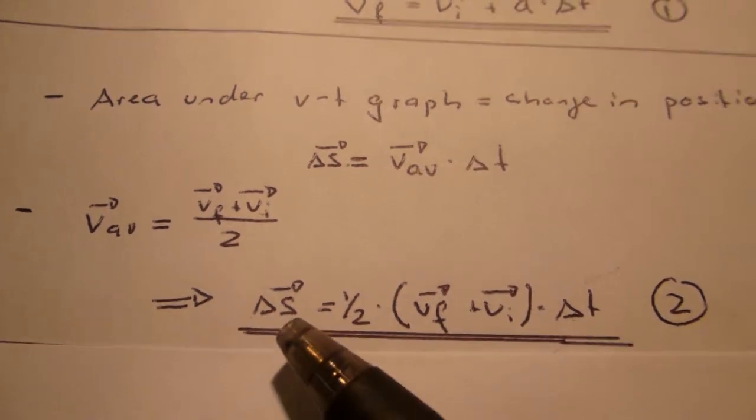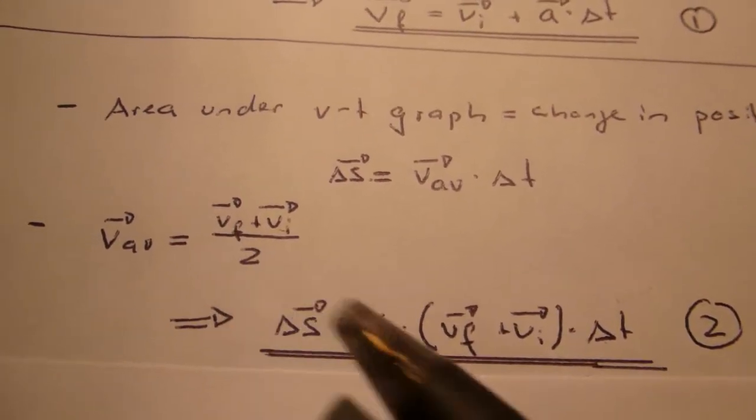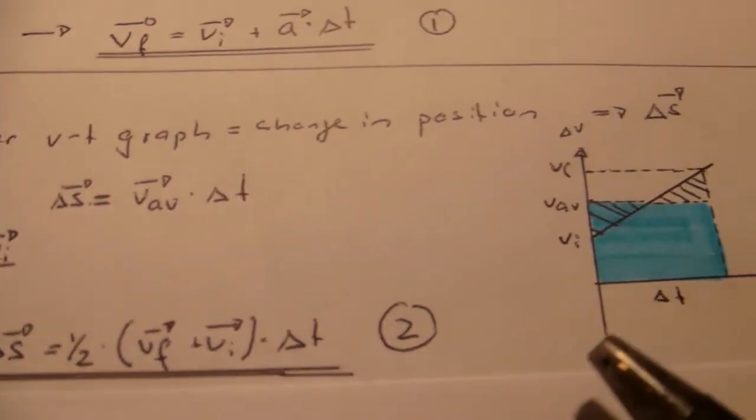Therefore, what you get is change in position is one half times V final plus V initial times delta t.